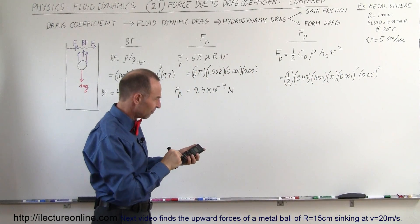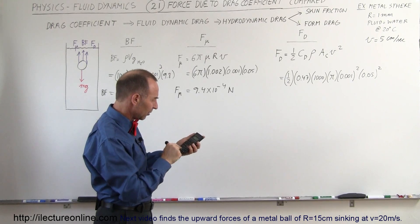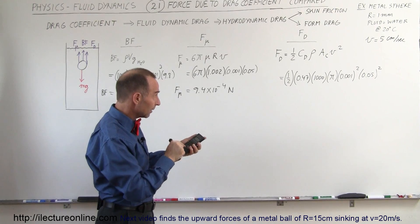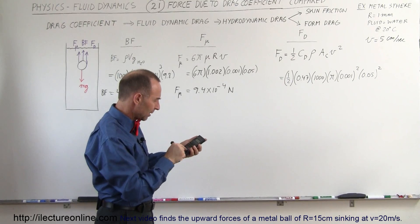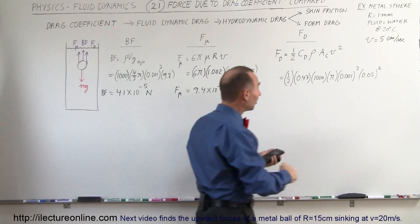Let's see what we get. So 0.5 times 0.47 times 1000 times π times 0.001 squared times 0.05 squared equals...